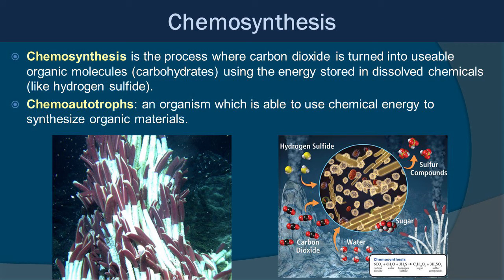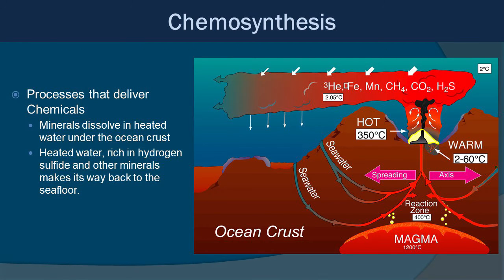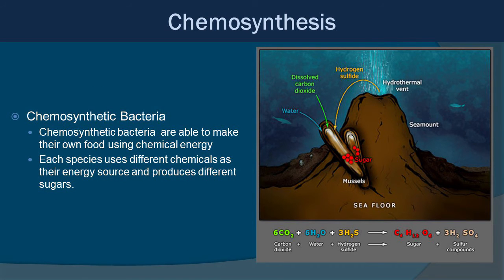We've been talking primarily about photosynthesis, but of course we also have chemosynthesis, which is the process where carbon dioxide is turned into usable organic molecules — carbohydrates — using the energy stored in dissolved chemicals like hydrogen sulfide. We have organisms called chemoautotrophs, which are able to use chemical energy to synthesize organic materials. Minerals dissolved in heated water under the ocean crust come out through vents, and this heated water is rich in hydrogen sulfide and other minerals. Chemosynthetic bacteria make their own food using that chemical energy, and each species uses different chemicals as energy sources and produces different sugars.